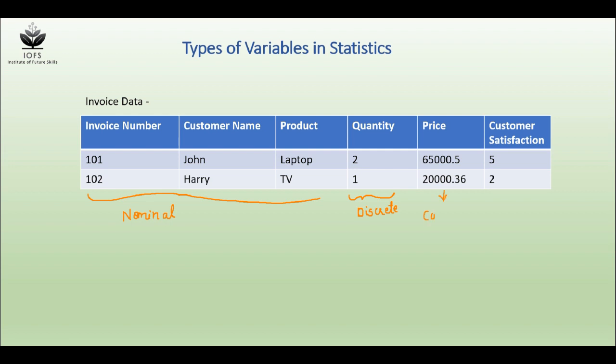Price is continuous. And customer satisfaction is ordinal data, which is a type of qualitative data.